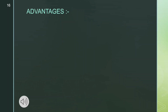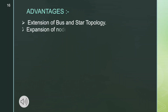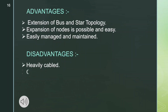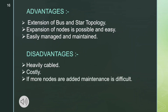Advantages of tree topology: it is an extension of bus and star topology; expansion of nodes is possible and easy; easily managed and maintained. Disadvantages: heavily cabled; costly if more nodes are added; maintenance is difficult; if the central hub fails, the entire network fails.